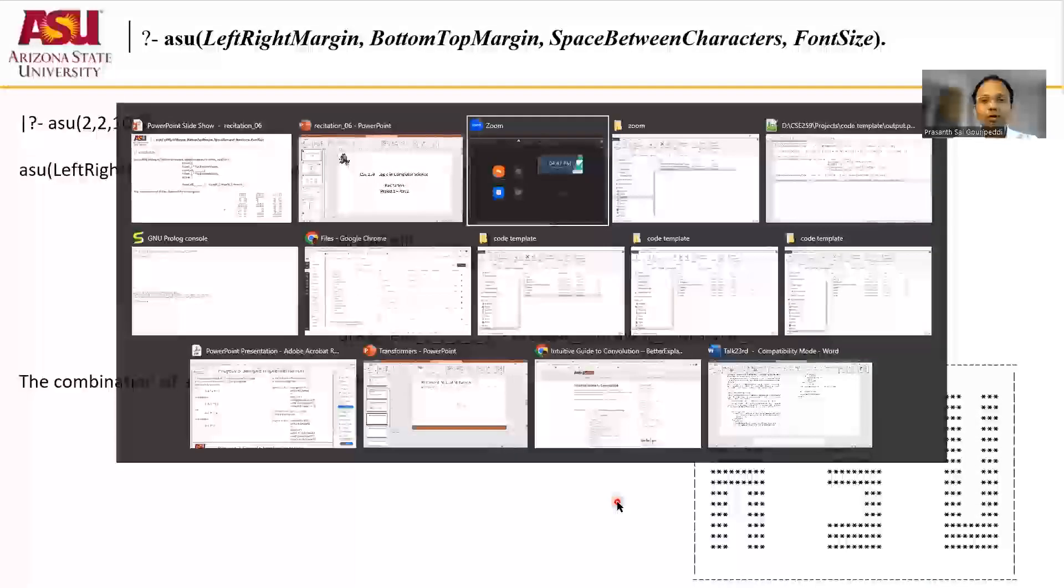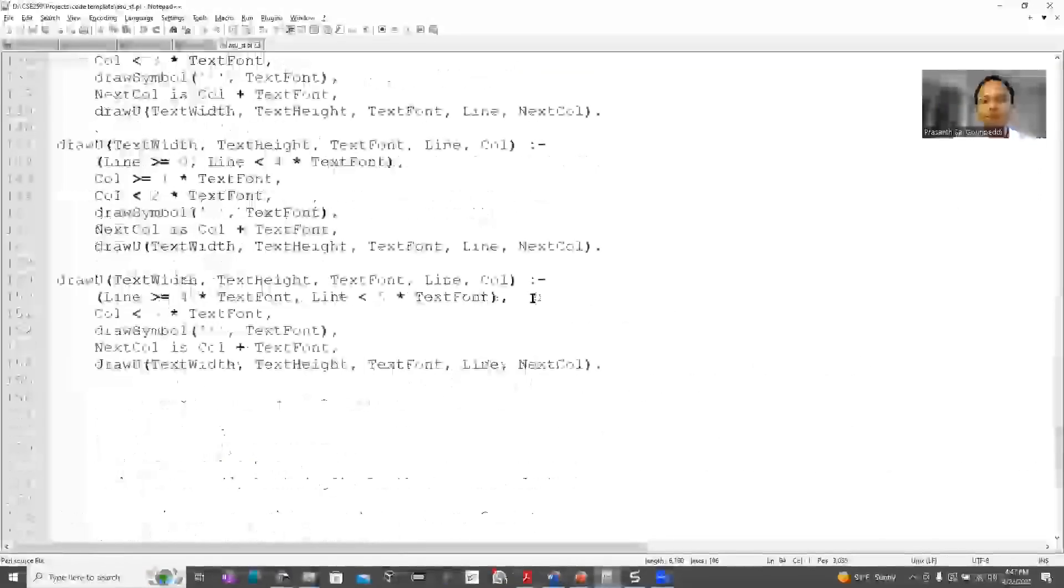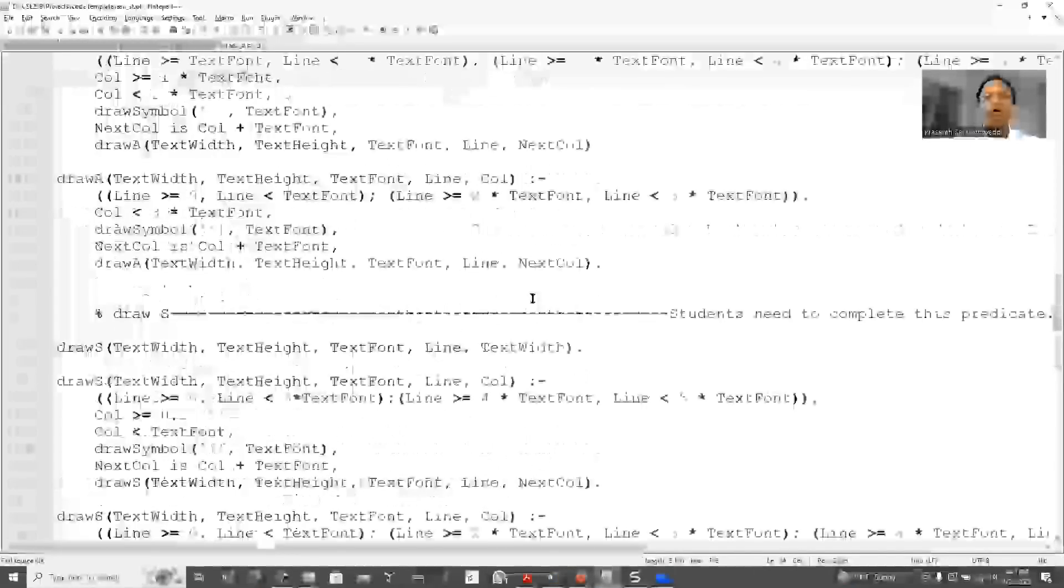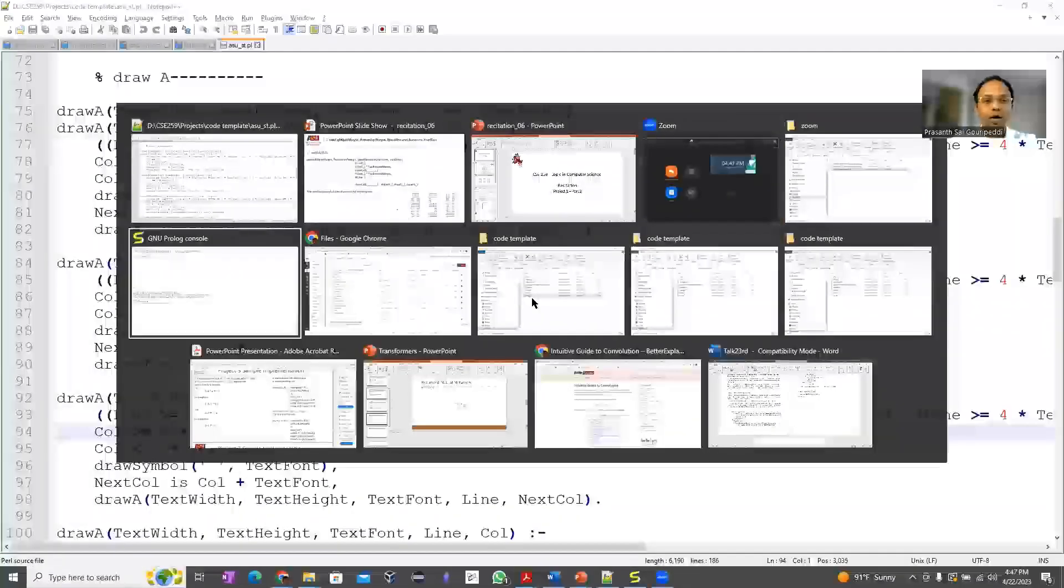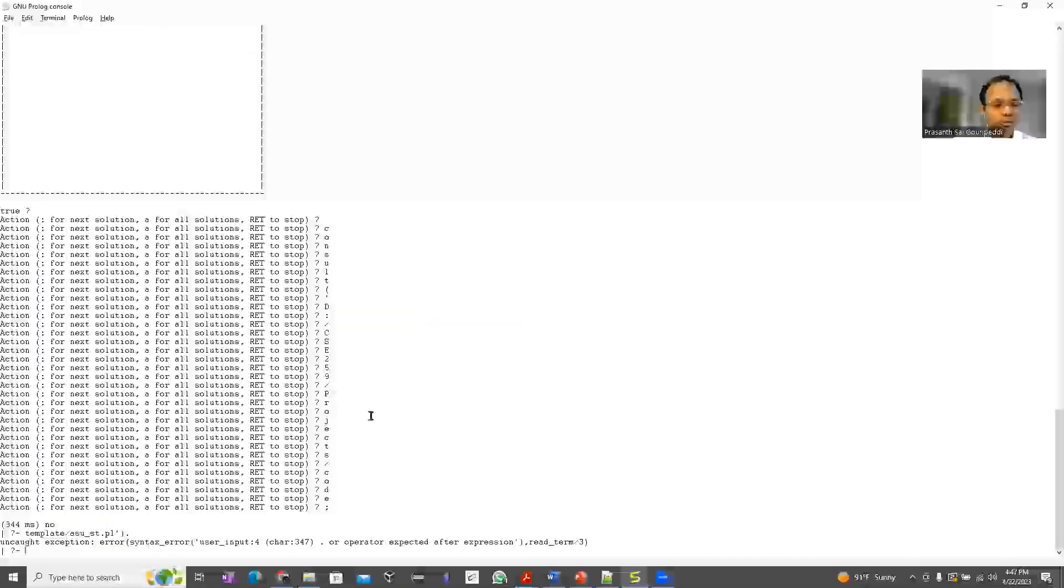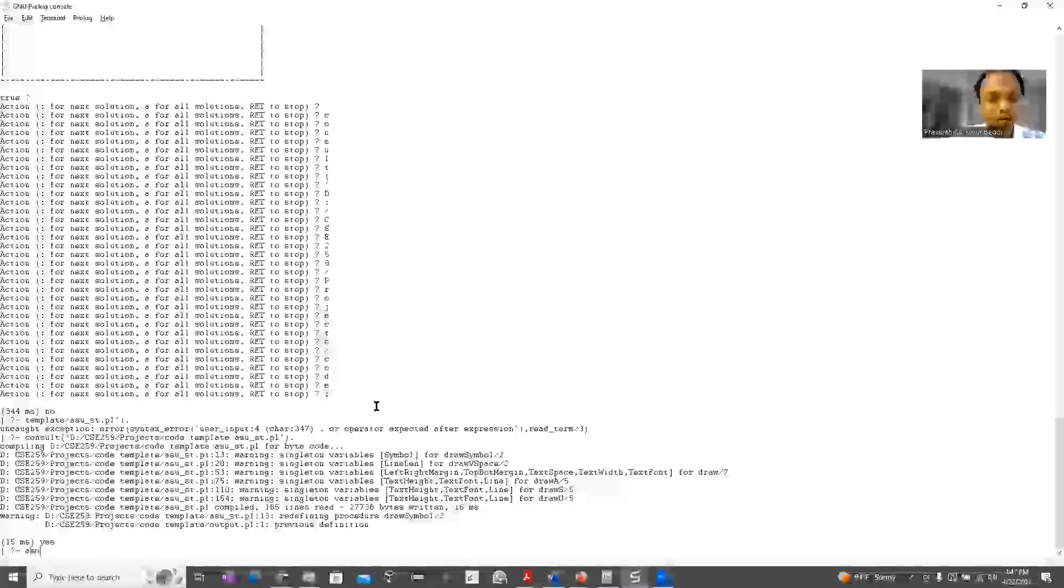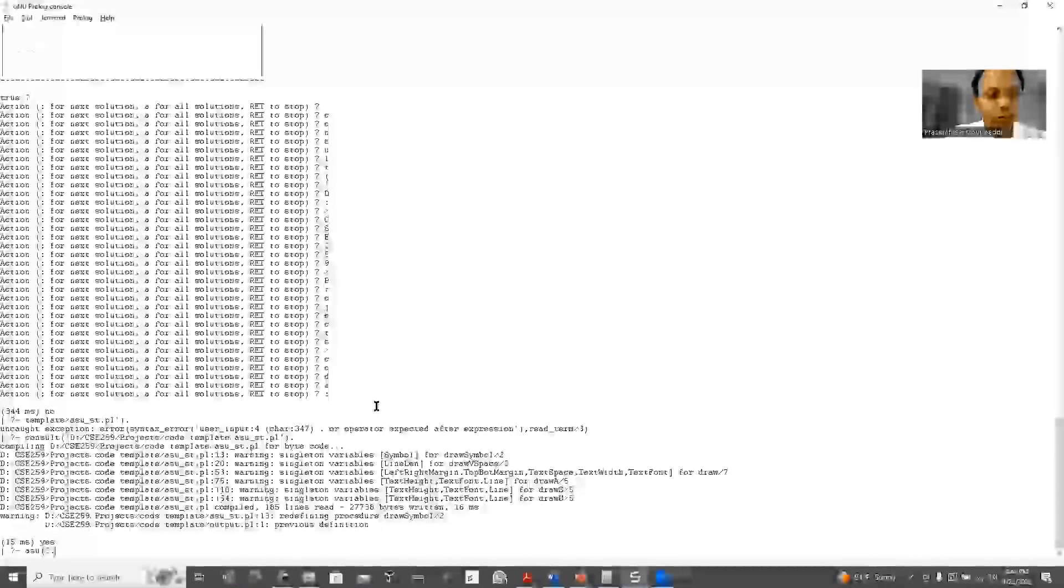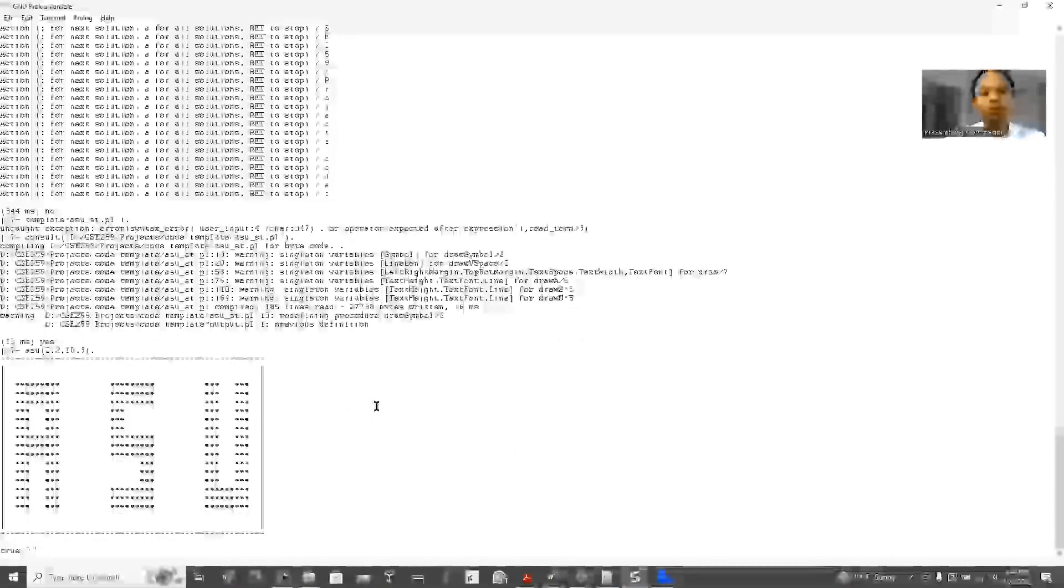So now let's look at the entire code as it is. So here is my code representing the entire thing. It's about 180 lines, not much, because what you do for A, U, and S are repetitive tasks. And let's run this in gprolog and see how it works. So let me go to file, consult asu.st. Okay, so let me run consult again. So there it is, and then I need to do asu (2, 2, 10, 3), putting the dot. That's the output.